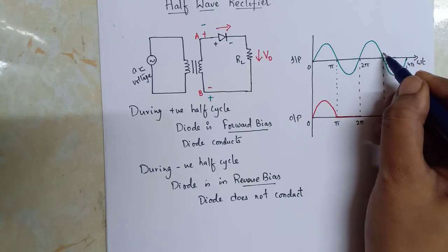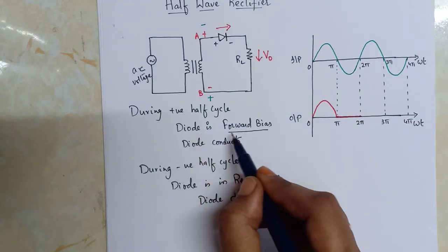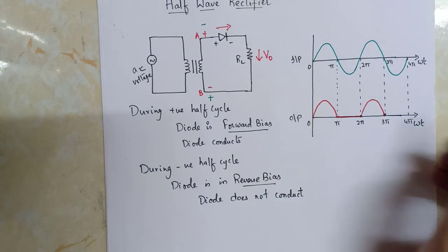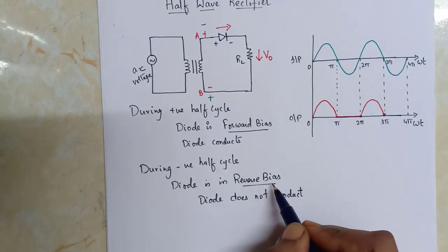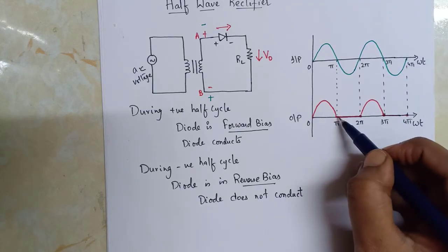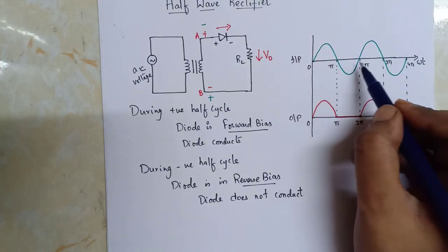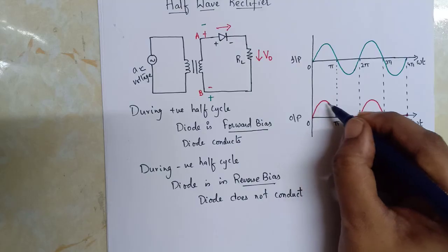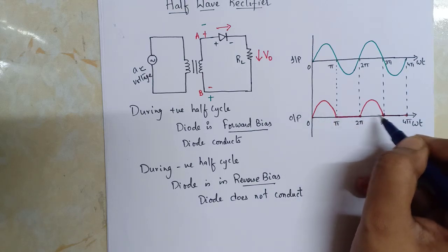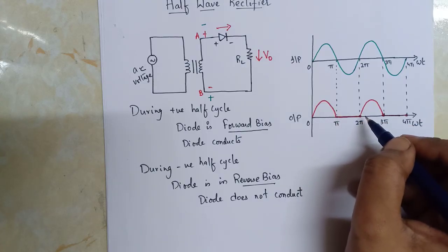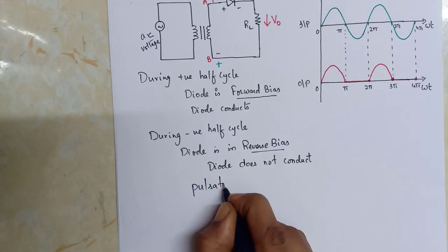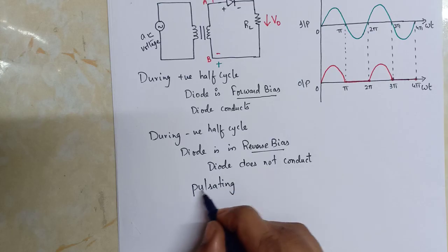Then again during the positive half cycle, the diode will be forward biased and there will be a voltage across the load resistor. Then again during the negative half cycle, the diode is in reverse bias and there will be no voltage across the load resistor — the voltage is zero. So this is the output voltage waveform compared to the input voltage waveform. If we observe this output voltage waveform, though it is not constant, it is unidirectional. There are variations, but the waveform is unidirectional. Hence we can say that the output of the half wave rectifier is pulsating and it is not 100% DC.